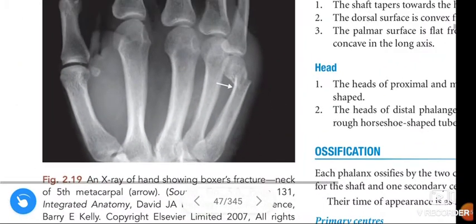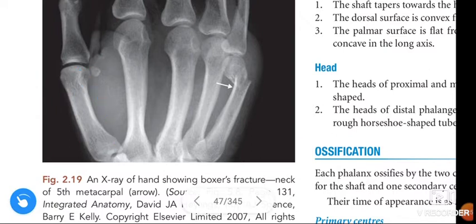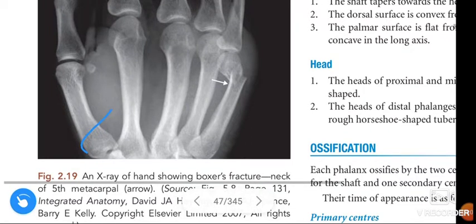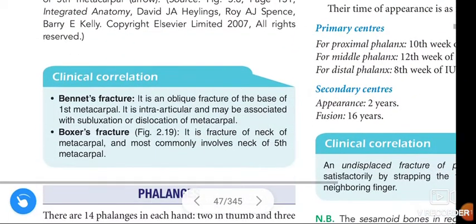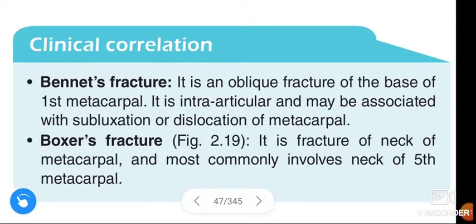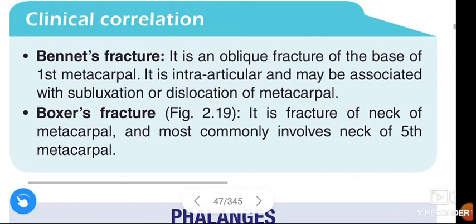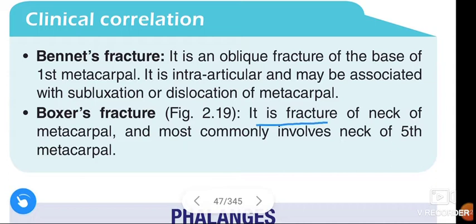In this figure, you can see the first metacarpal. Bennett's fracture occurs at the base of the first metacarpal — it is an oblique fracture at the base. That is what we call a Bennett's fracture.